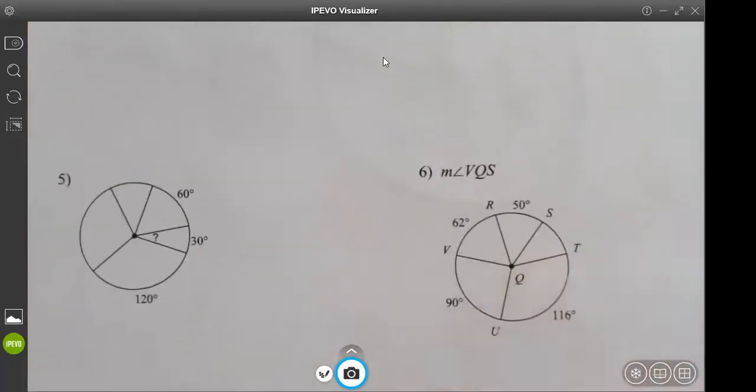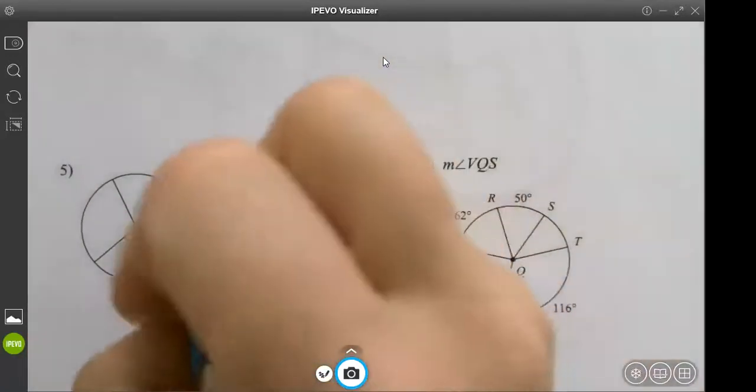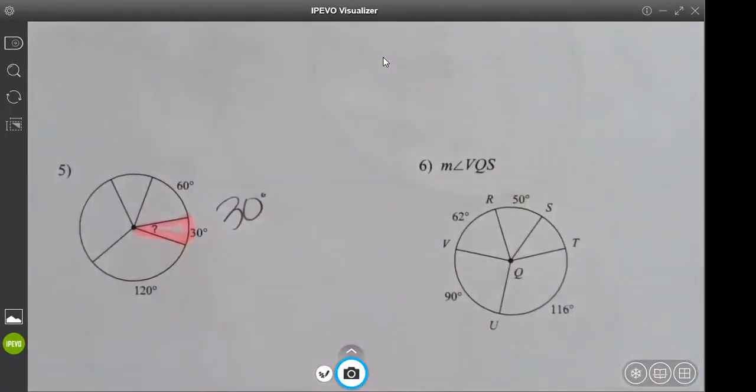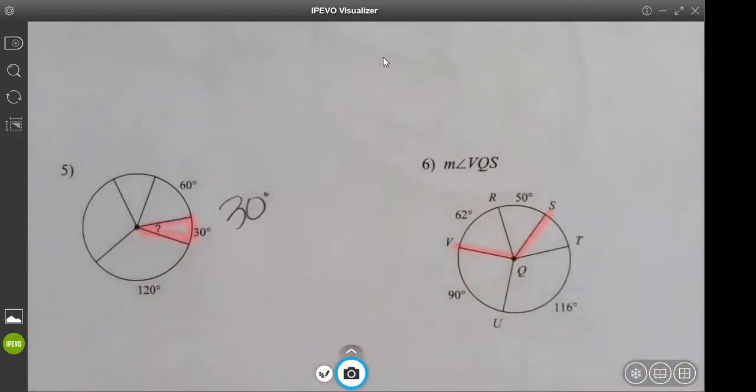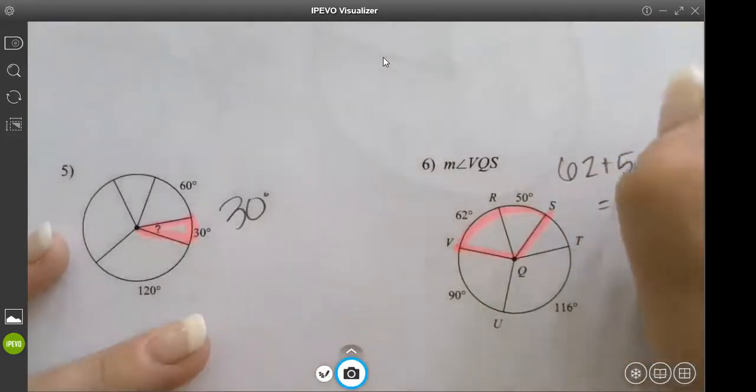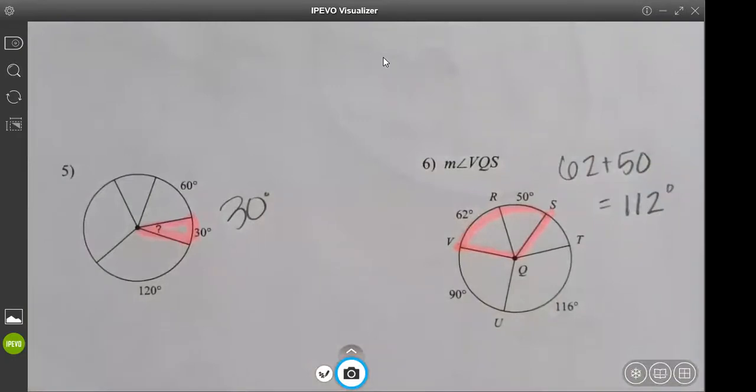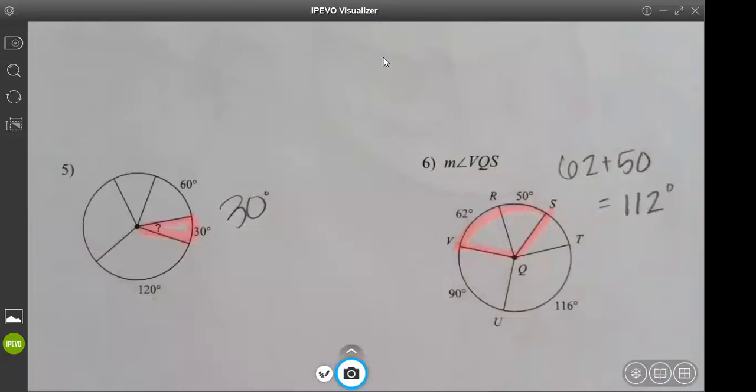Number five, we're looking for this angle. When you get to ones that label it like this VQS, M stands for measure of angle VQS. You're going to go in order. Q is going to be your vertex. So V to Q to S. We know it's this big arc right here, made up of two. So what do you think we should do? Just add them. So we're going to add 62 plus 50, which gives us 112.